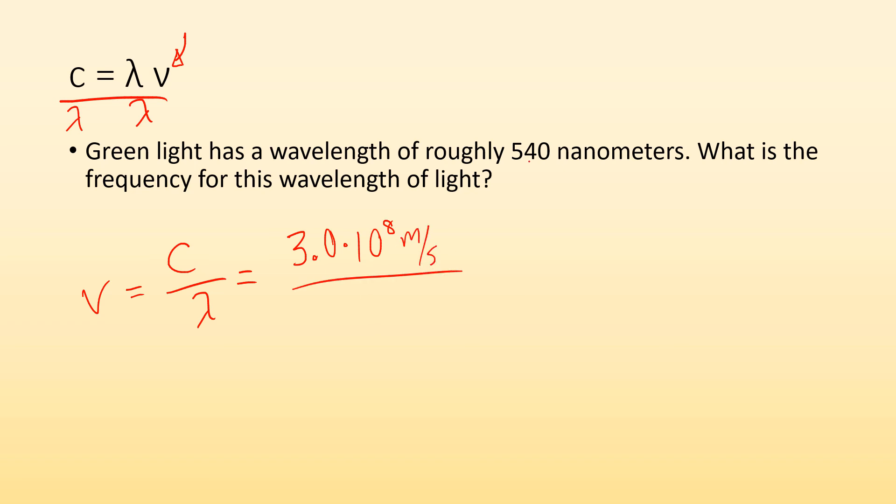So the speed of light is 3.0 times 10 to the eighth meters per second. And then the 540 nanometers, nano means 10 to the minus 9. So I have 540 times 10 to the minus 9 meters.